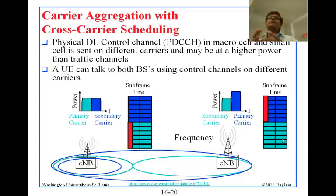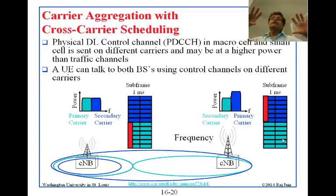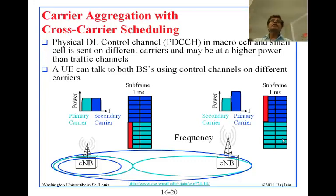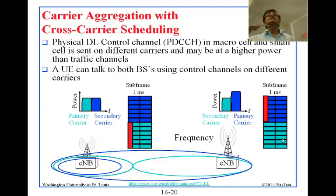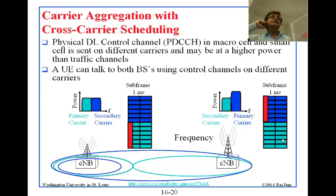The ENBs have become very smart and no longer need to worry about keeping towers on separate frequencies. Previously, cellular networks required keeping towers away from each other in frequency. Now for 4G we do not do that anymore, though 2G and 3G equipment is old and still does.